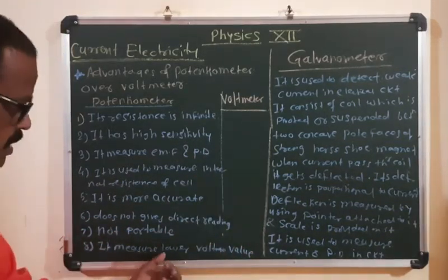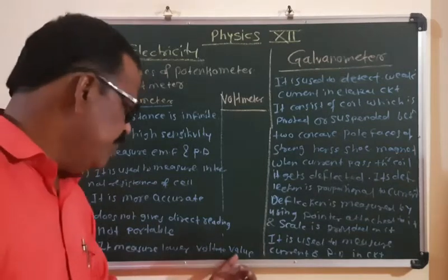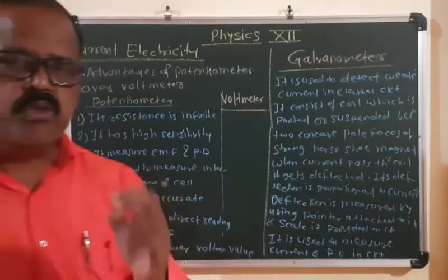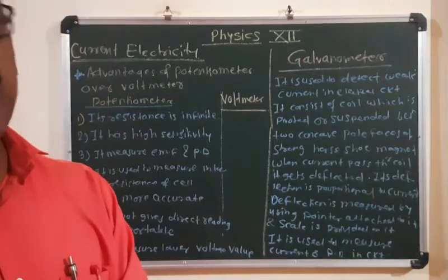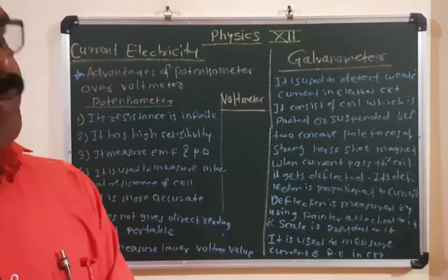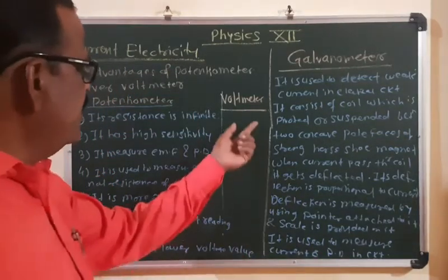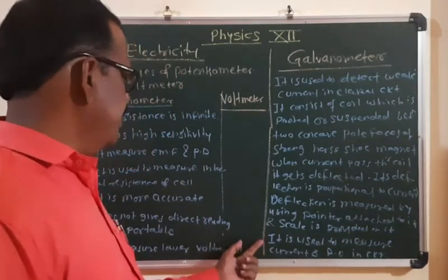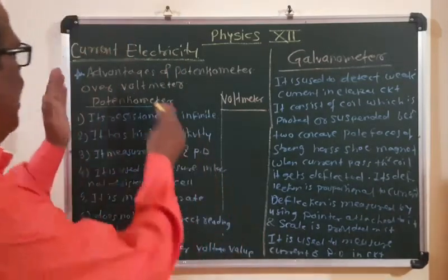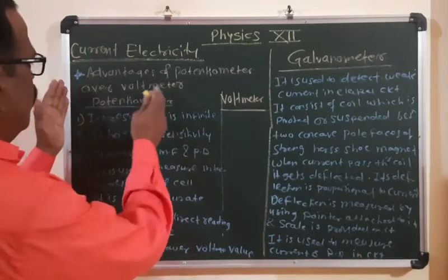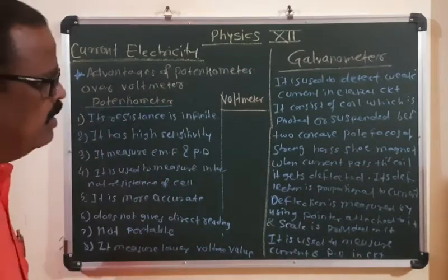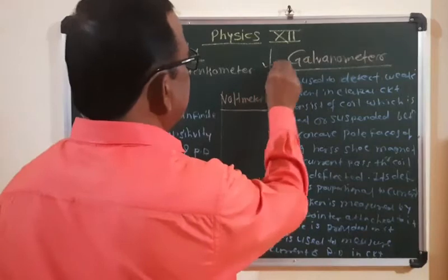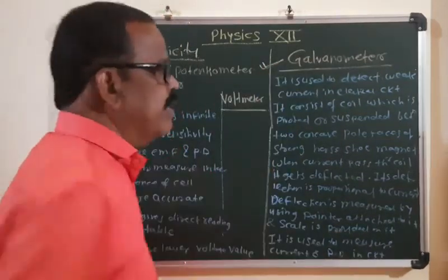The last point is that the potentiometer is used to measure lower values of potential difference, whereas the voltmeter measures high values of potential difference. These are the advantages of potentiometer over the voltmeter.